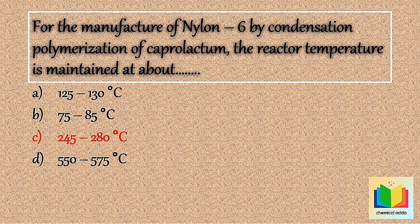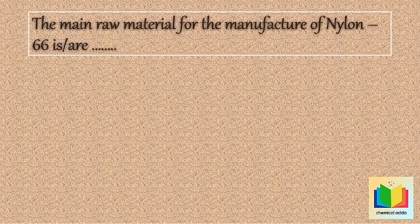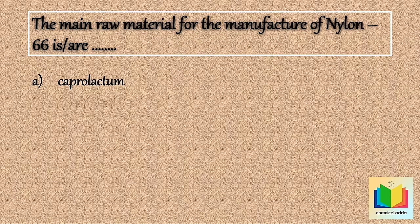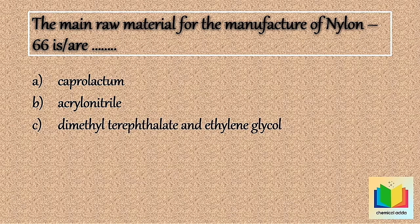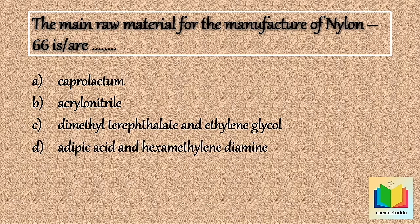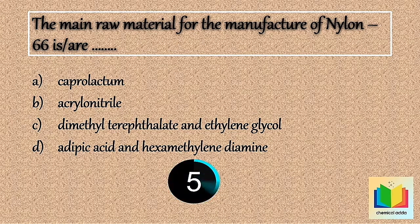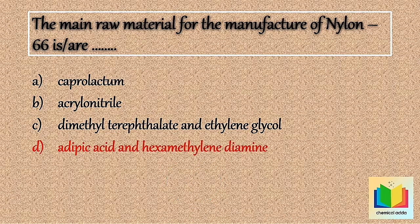Next question: The main raw material for the manufacture of Nylon 66 is — . Option A: Caprolactam. Option B: Acrylonitrile. Option C: Dimethylene terephthalate and ethylene glycol. Option D: Adipic acid and hexamethylene diamine. [10 seconds] So the answer is Option D: Adipic acid and hexamethylene diamine.